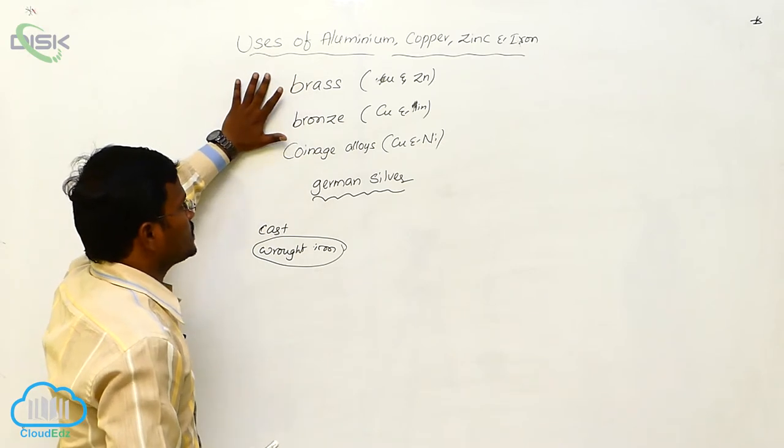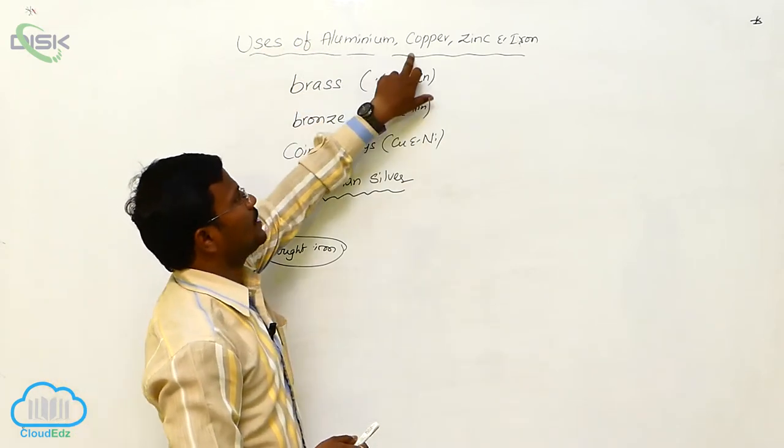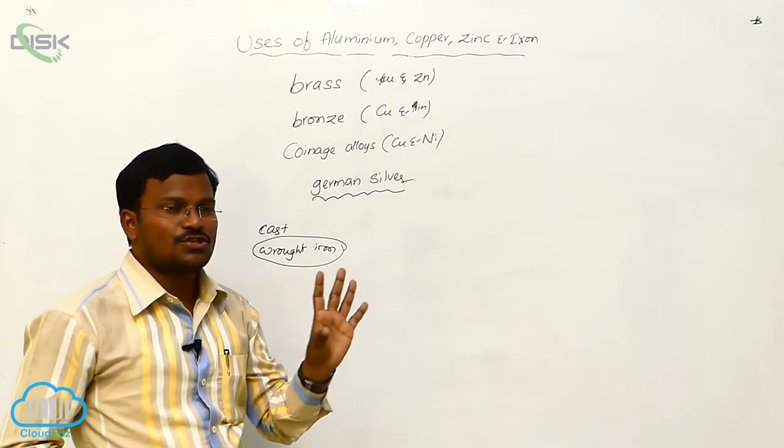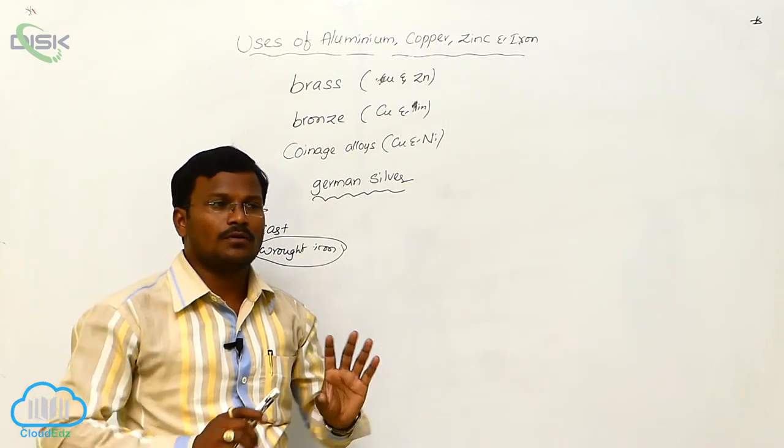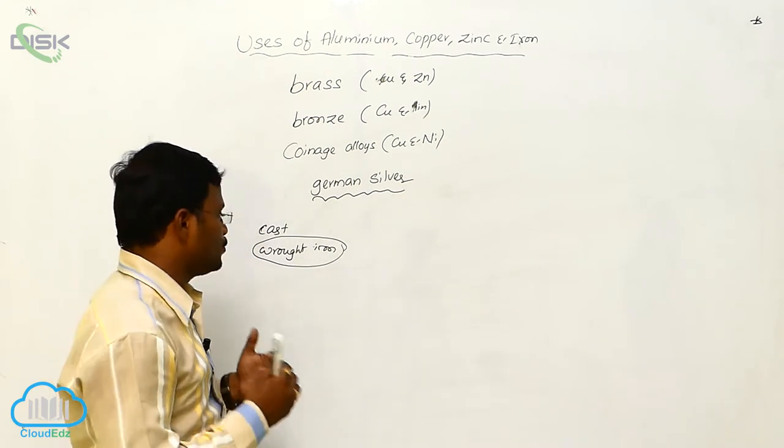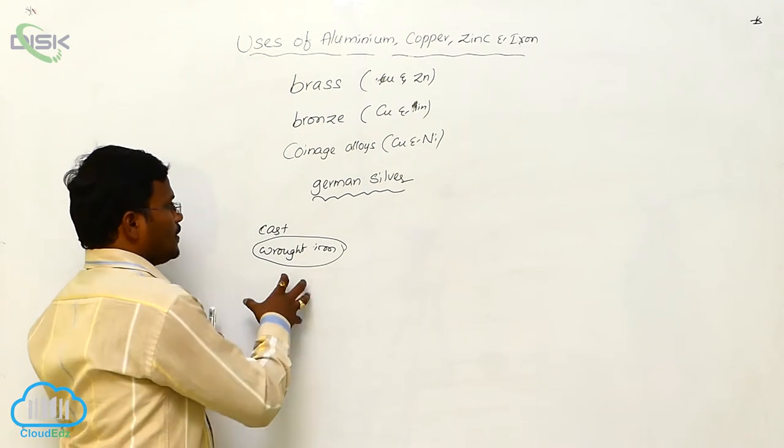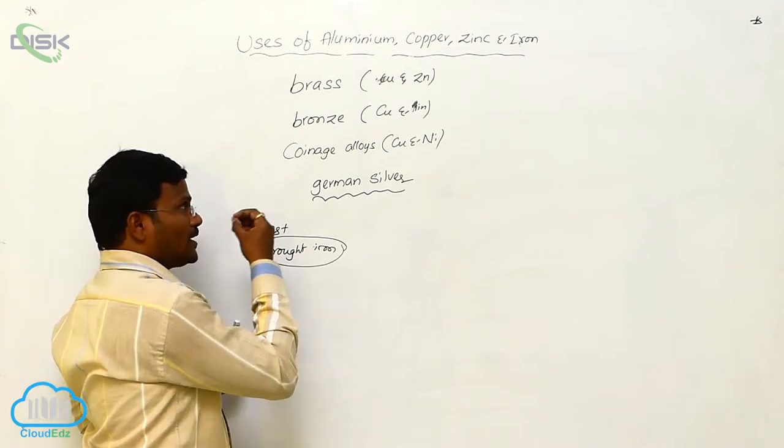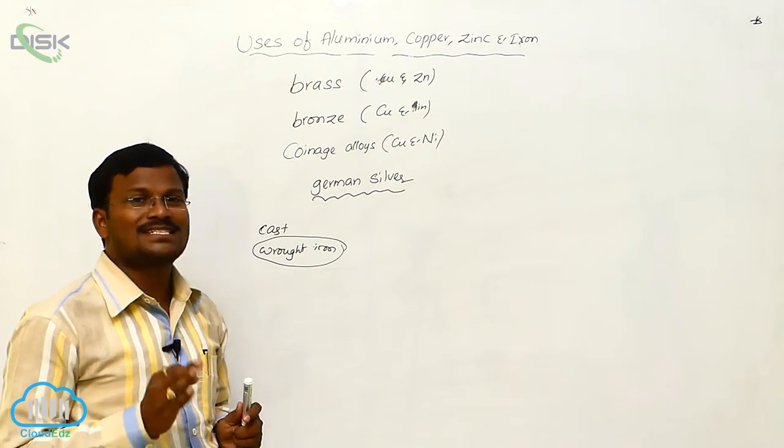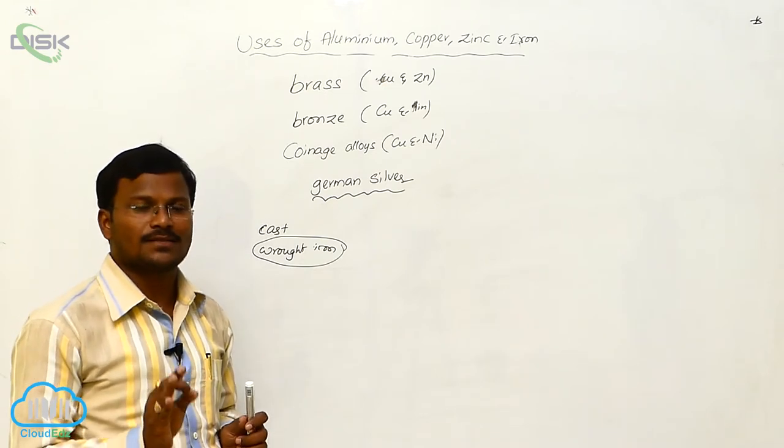So, these are some importance of Aluminium, Copper, Zinc and Iron. And one more, the Iron instruments or Iron materials are used regularly in our life. Used by us regularly. Here, the most important alloy expected from Iron is Steel and Stainless Steel.